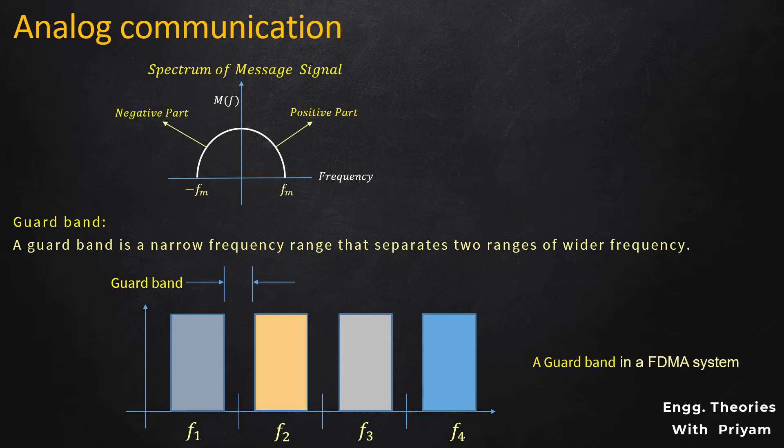A guard band is a narrow frequency range that separates two ranges of wider frequency, creating a vacant space between two radio frequency bands. This is used to avoid interference between communication channels, which would result in decreased quality for both transmissions. Now let's see what changes occur to the spectrum of the SSB-SC modulation when we use a guard band in the message signal.